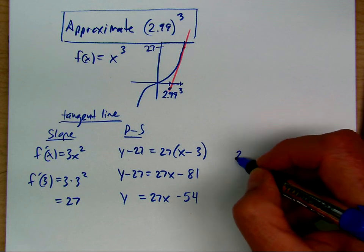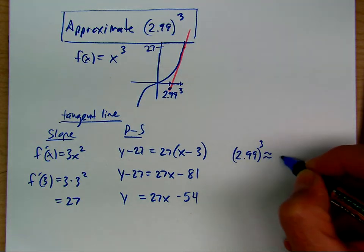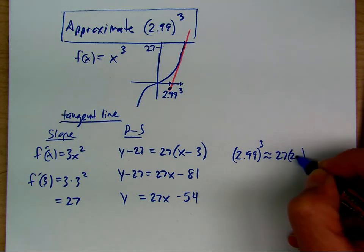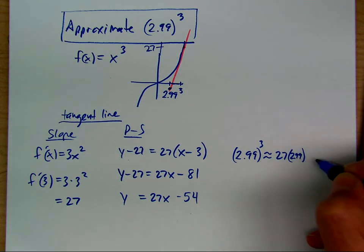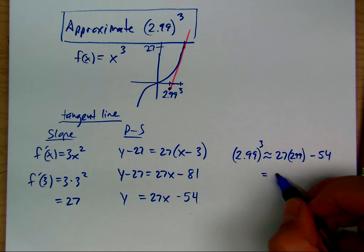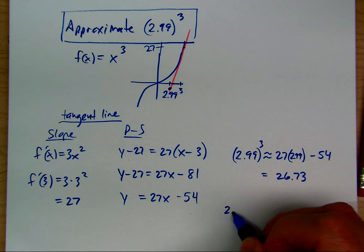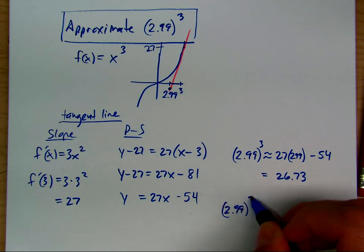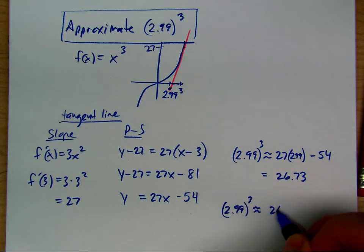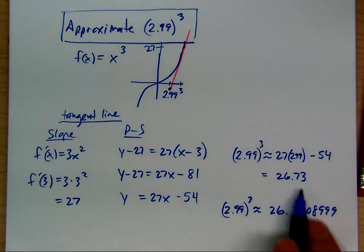The approximation: 2.99 cubed is approximately 27 times 2.99 minus 54, which gives 26.73. If we compute 2.99 cubed on the calculator, we get 26.730899. So we got pretty close.